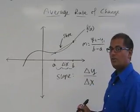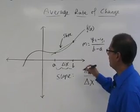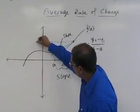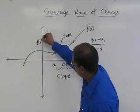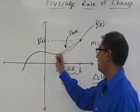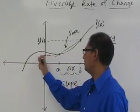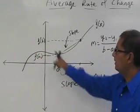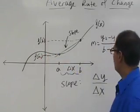But what is my change in y? What is y2 minus y1? Well, up here, if we were to take this back to the y-axis, this would be f of b. And if I take this back to the y-axis, this is f of a. So my change in y is f of b minus f of a.